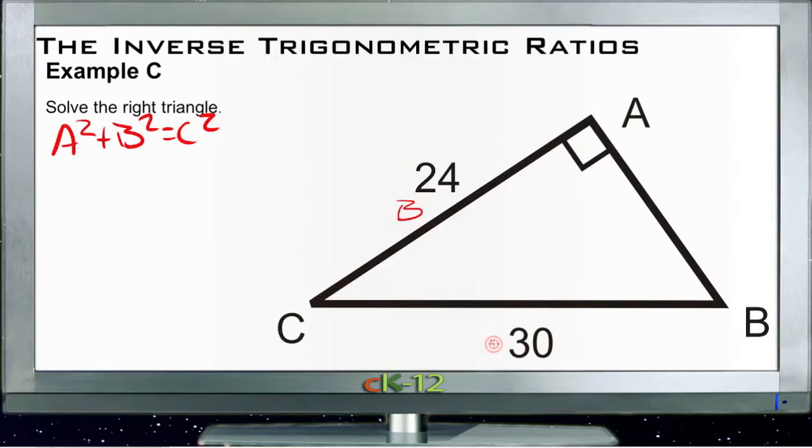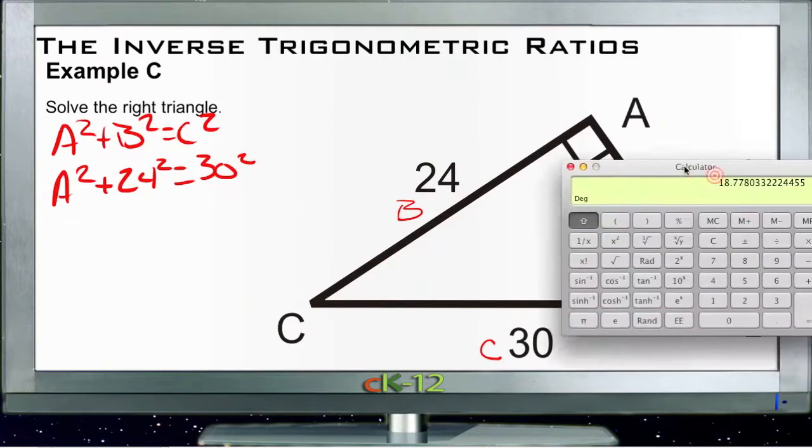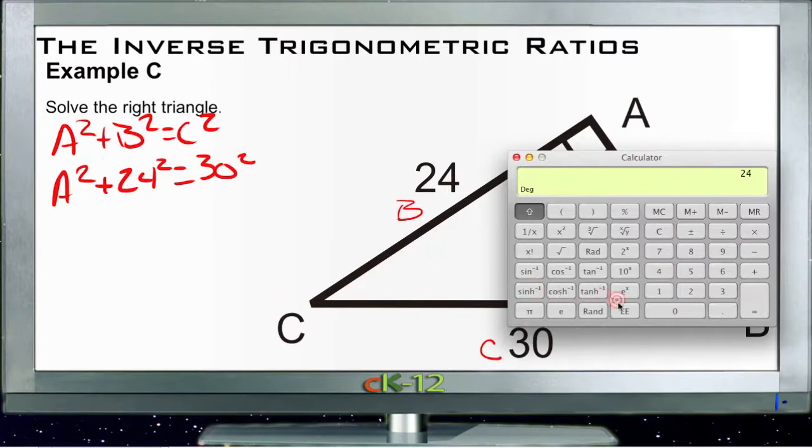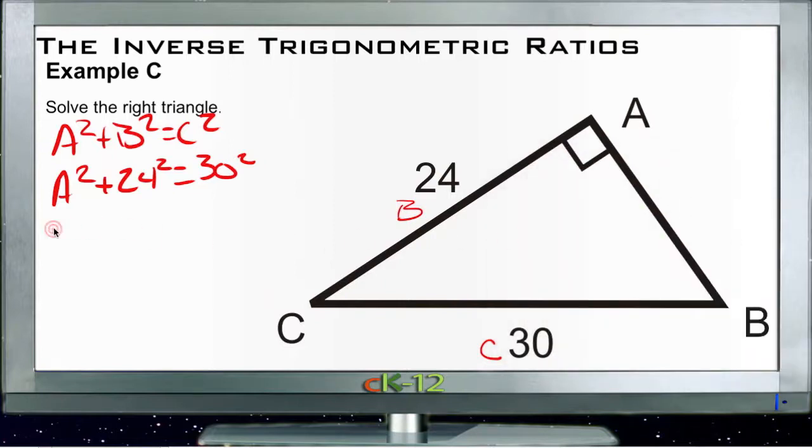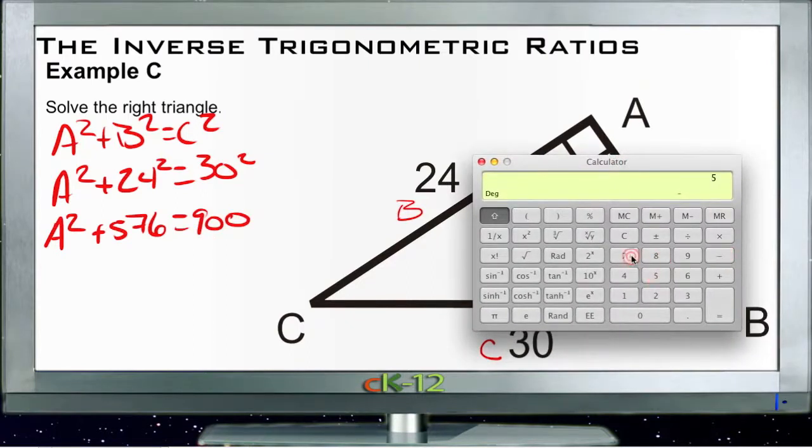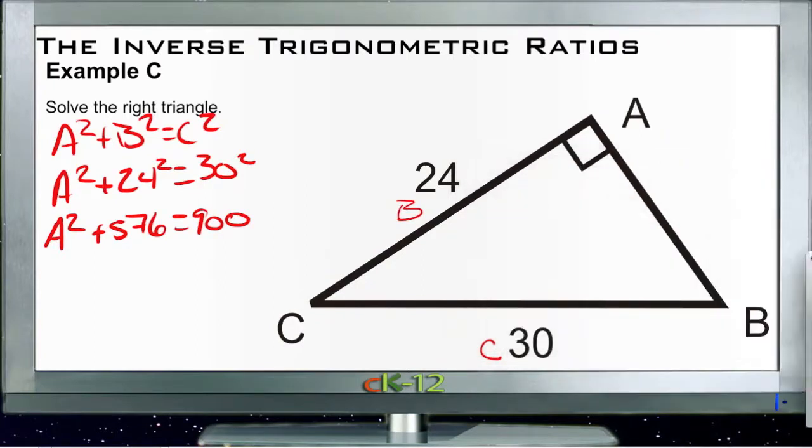A squared plus B squared equals C squared. We have side B and side C, so A squared plus 24 squared equals 30 squared. 24 squared is 576 and 30 squared is 900. So A squared plus 576 equals 900. Subtracting 576 from 900 gives us 324. The square root of 324 is 18, so A equals 18.